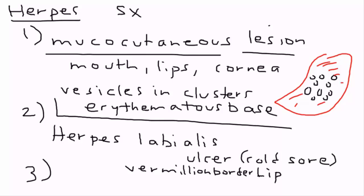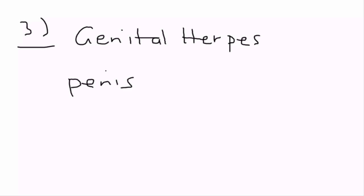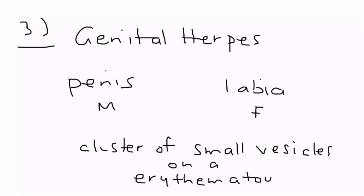The last and most common type is genital herpes, which is by far the most common — and in fact the most common ulcerative sexually transmitted disease in the world. On either the penis in a man or the labia in a female, you see a very similar cluster of small vesicles on an erythematous base, just appearing in the genital area.